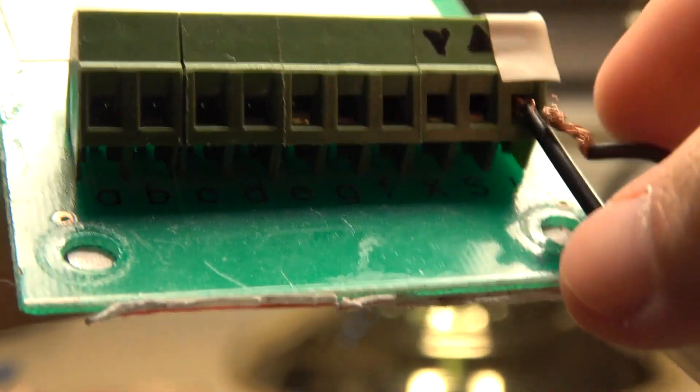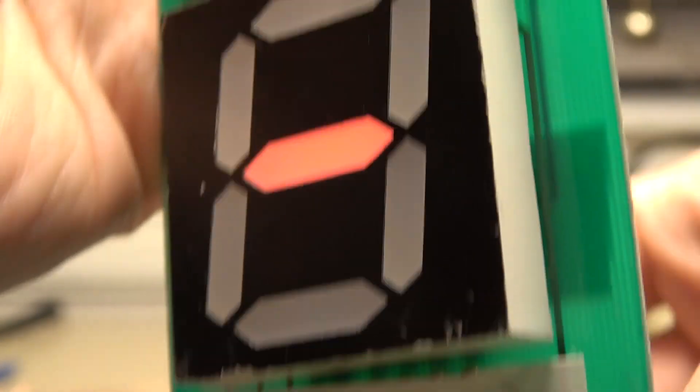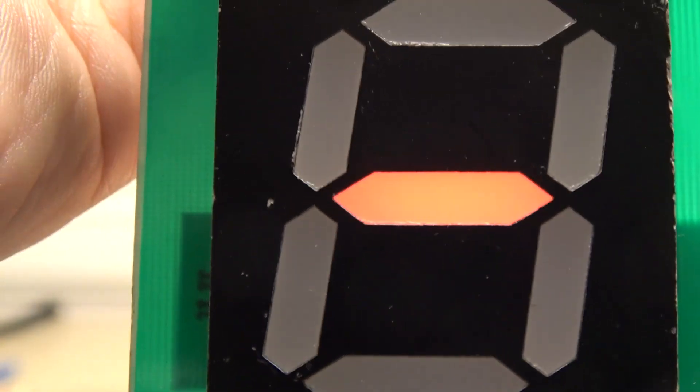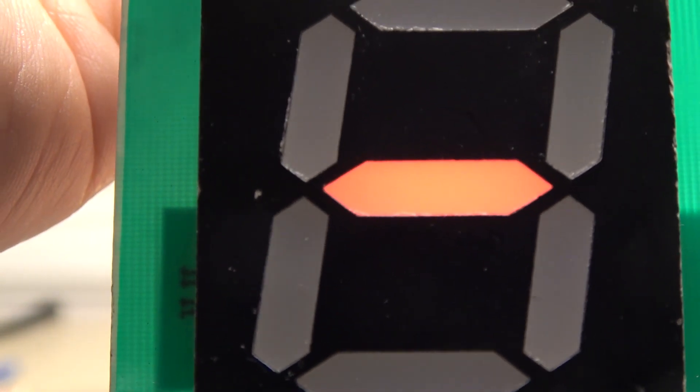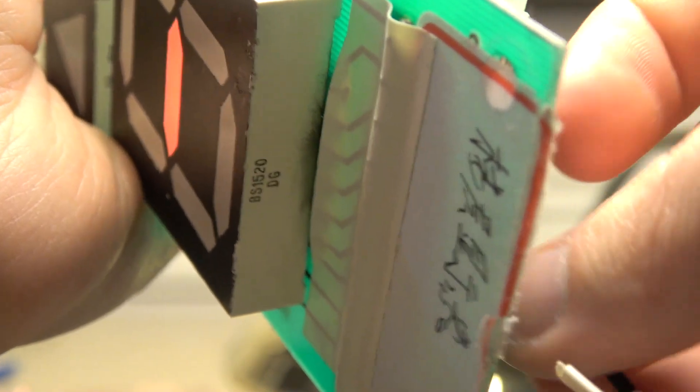Now, we're going to move on to lowercase G. Let's see what segment line lights up. The middle segment line right there. That's the middle segment line that lights up. So, you just take it off and it goes off. Just like that. Pretty cool.